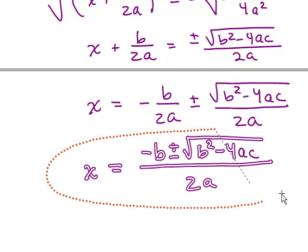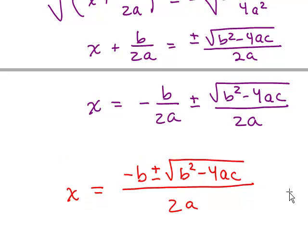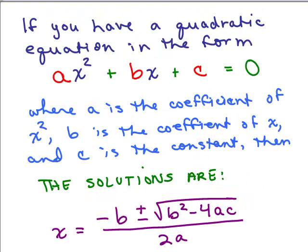Awesome — there it is, the quadratic formula! If you have a quadratic equation in the form ax squared plus bx plus c equals 0, where a is the coefficient of x squared, b is the coefficient of x, and c is the constant, then you don't have to complete the square anymore. The solutions for x are simply negative b plus or minus the square root of b squared minus 4ac, all over 2a. If given this form, just plug in a, b, and c and simplify.